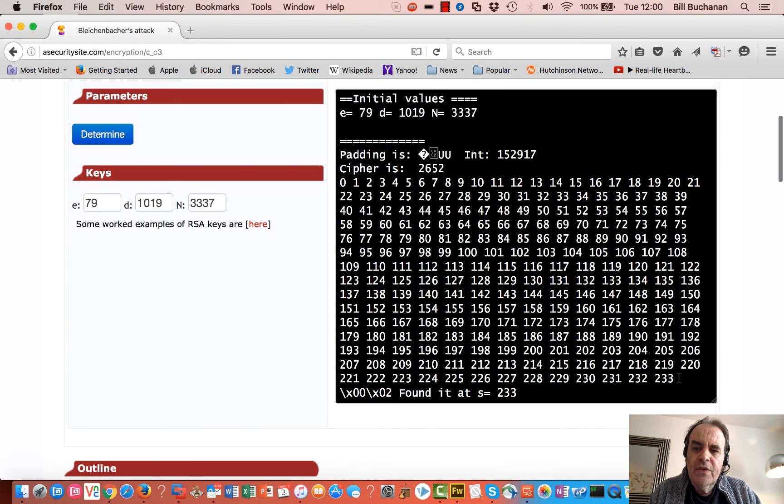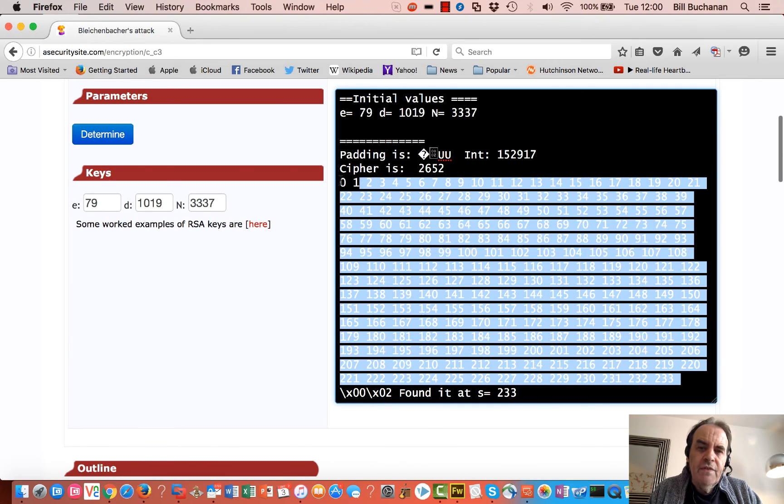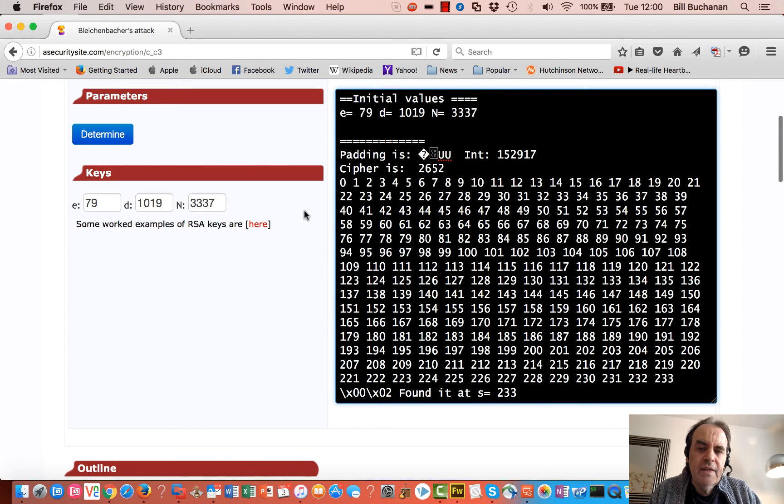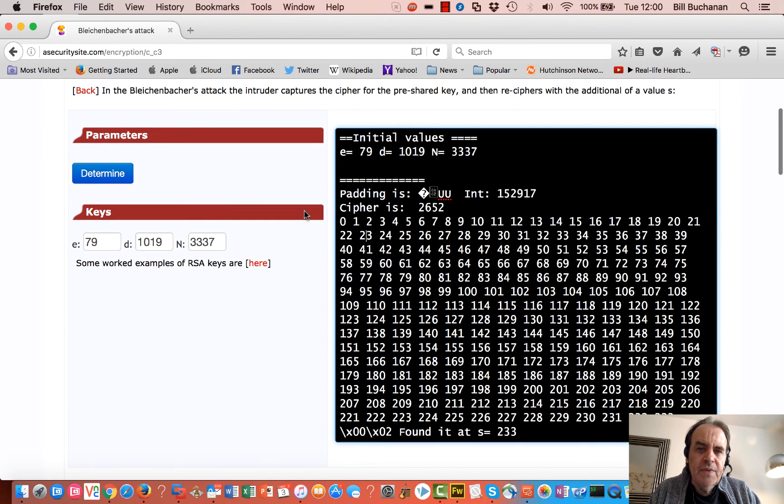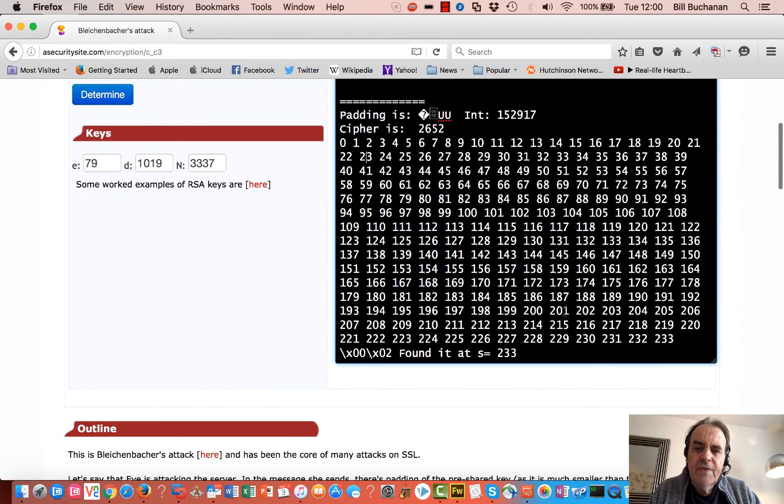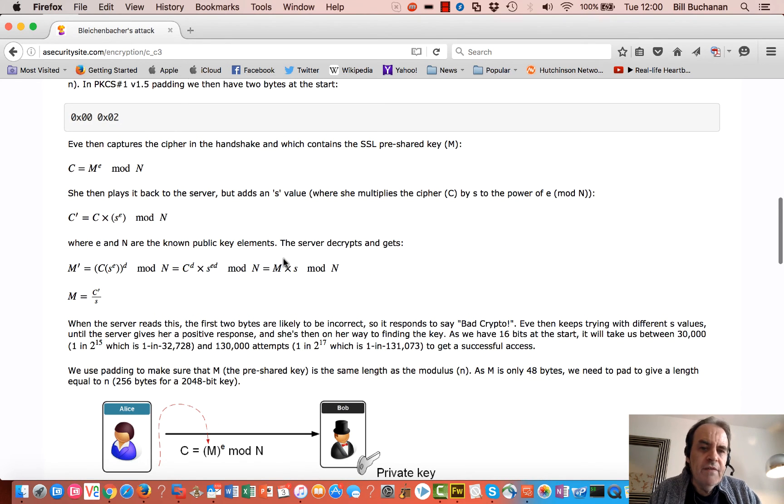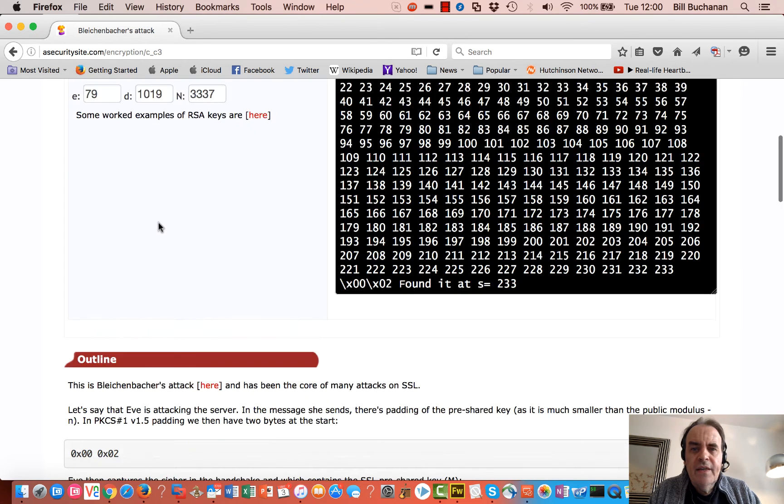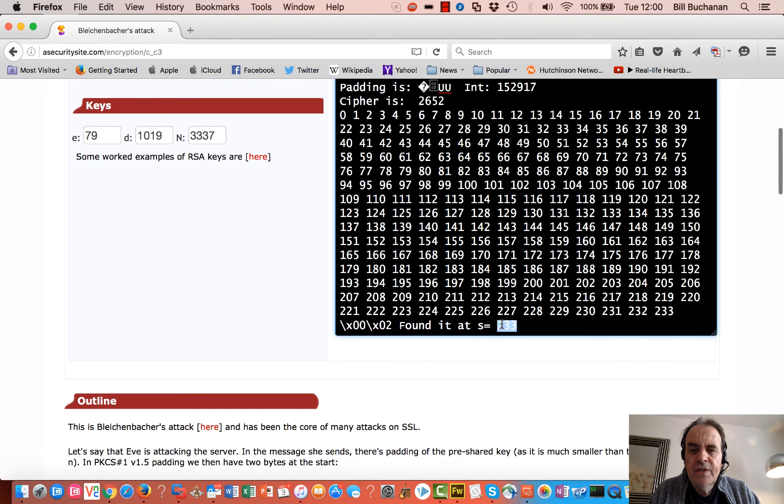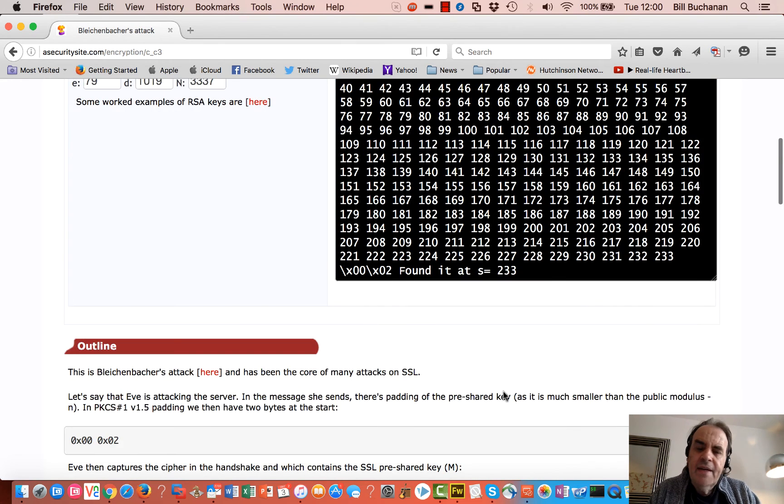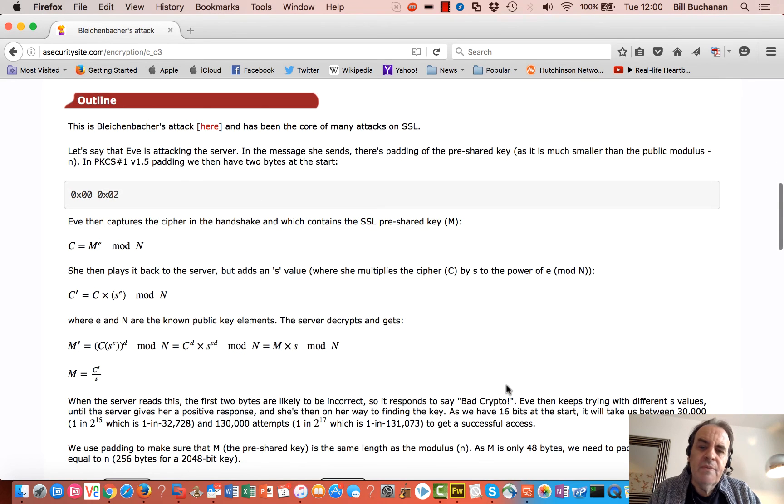The program itself just basically goes through a range of values until it can actually find one that starts with 0 and 3, a 2. So in this case it's found at 2 to 3. These are the s values that we have here. What's happened here is that when we calculate the s values to the power of e and we go through it, then this one here actually produces a decrypted value of 0 and 2. So we don't get an error, and it might not be the right key yet, but we don't actually get an error.